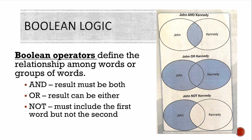Boolean logic — Boolean operators define the relationship among words or groups of words. When you're searching for something and you use AND, the result must include both terms. So if you search for John AND Kennedy, anything with both words will show up. If you use OR, then the result can be either term — it would return all of them. If you use NOT, it must include the first word but not the second.